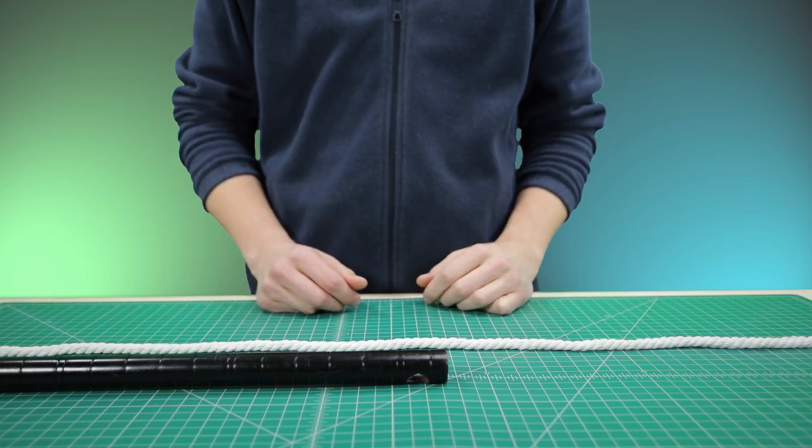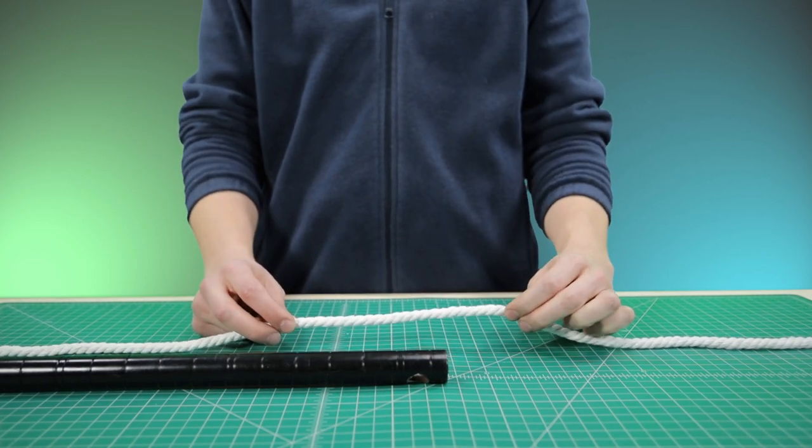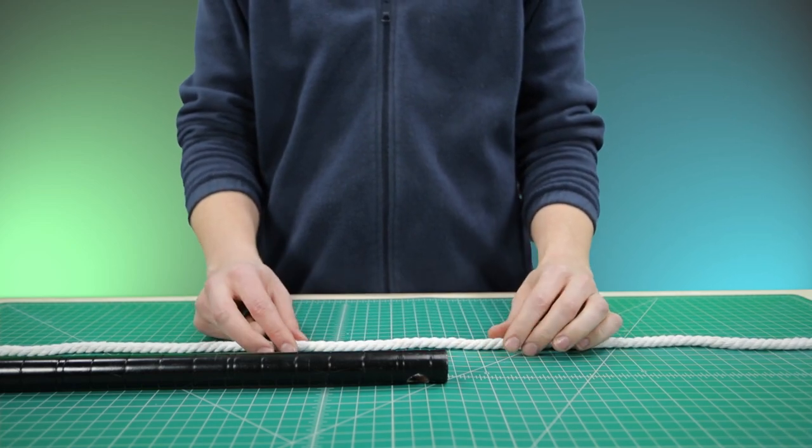This second method of tying the constrictor knot is best when you have access to one end of your object, but not access to either end of your rope. So this knot is tied in the bite, or in the middle of the rope.